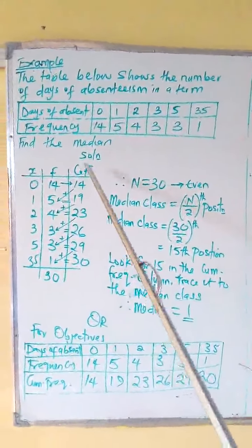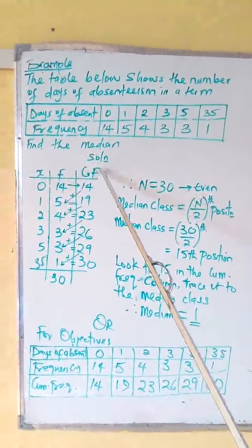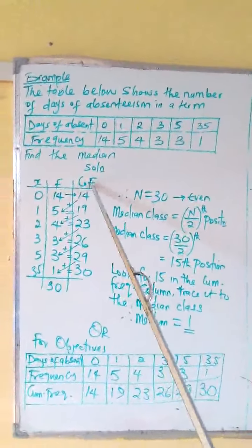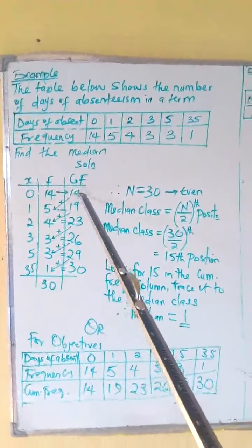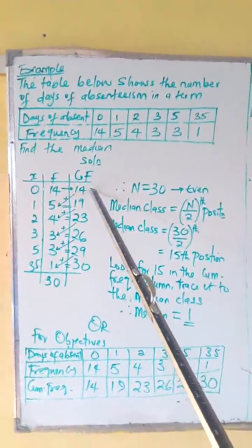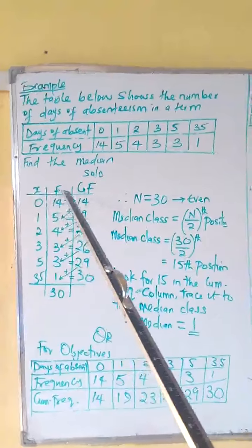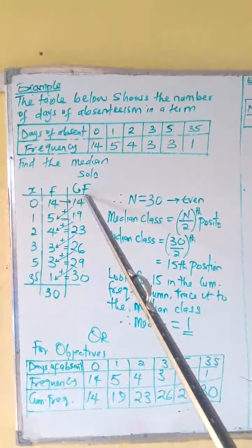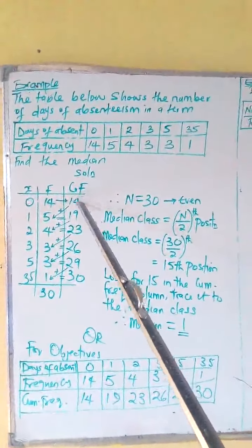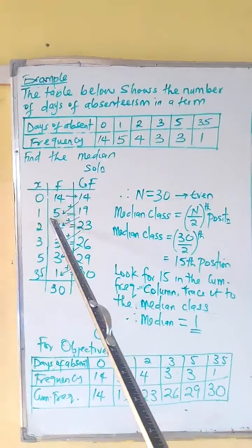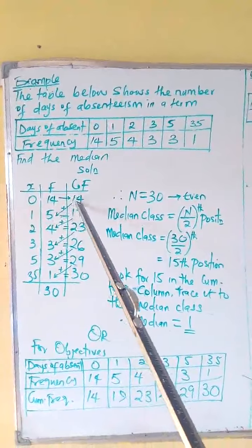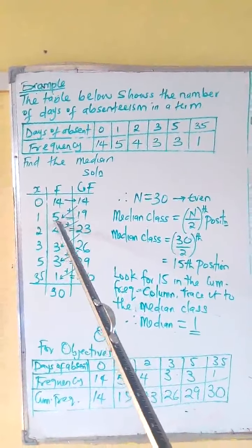we need to get a column for cumulative frequency. That is this. How do we get it? Our first frequency is our first cumulative frequency. Take note. First frequency is the first cumulative frequency. You start in that order. Now, to get the next cumulative frequency, add 14 to the subsequent frequency. So it's going to be 14 plus 5, 19.